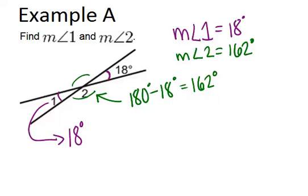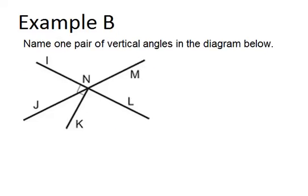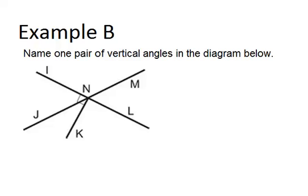Let's go on to example B. Example B says name one pair of vertical angles in the diagram below. This will let us practice finding vertical angles and also naming angles. The one pair of vertical angles is this angle and this angle over here, because these are the intersecting lines and these are the angles formed by those intersecting lines.